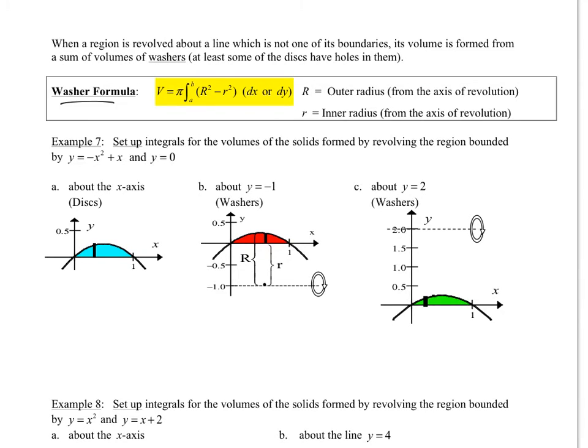If we take the washer method, this happens when we revolve about a line which is not one of the boundaries on what we have. So the axis of rotation is not adjacent to the region that we are rotating. So if we look at example number seven here, we're going to take this y equals negative x squared plus x, and we're going to revolve it around.